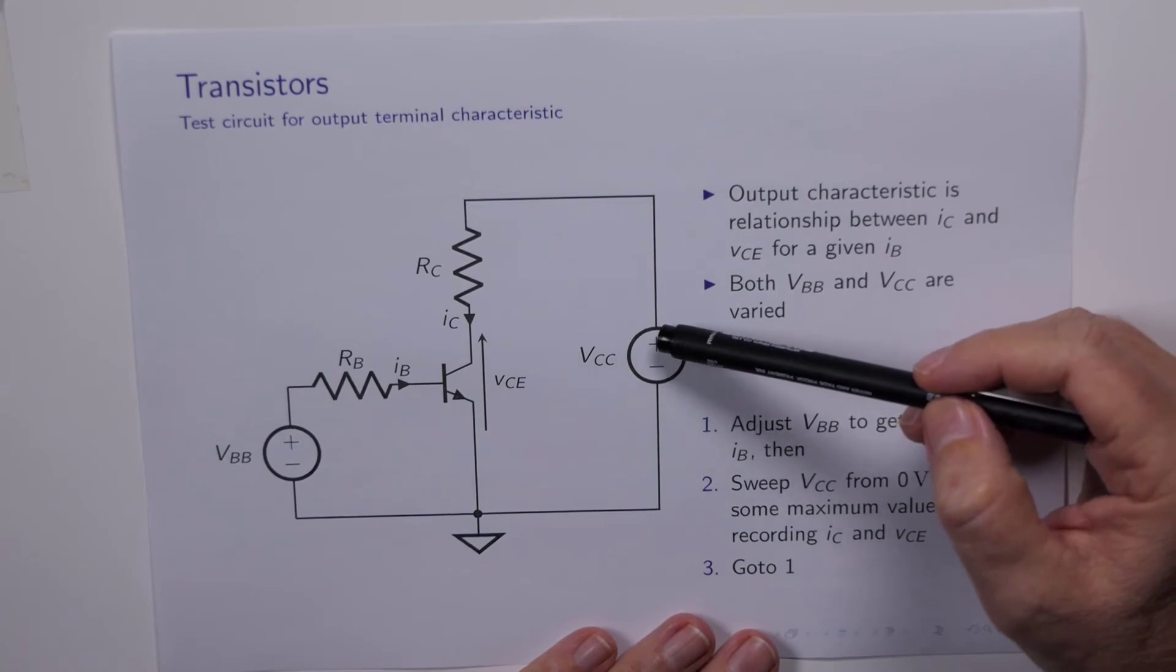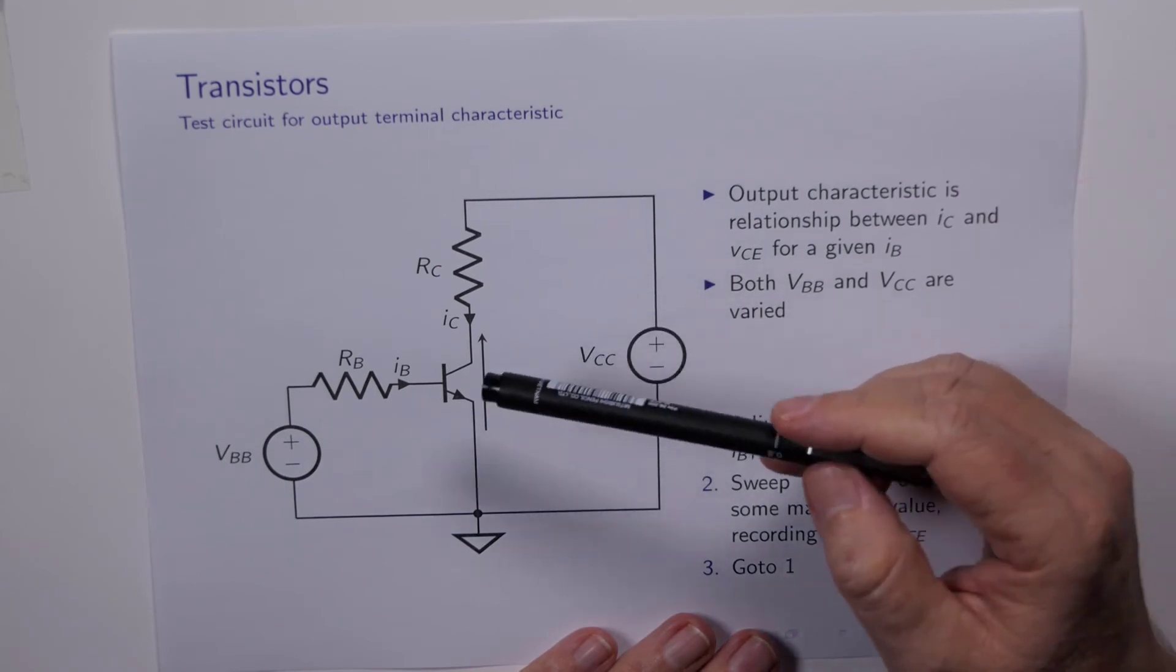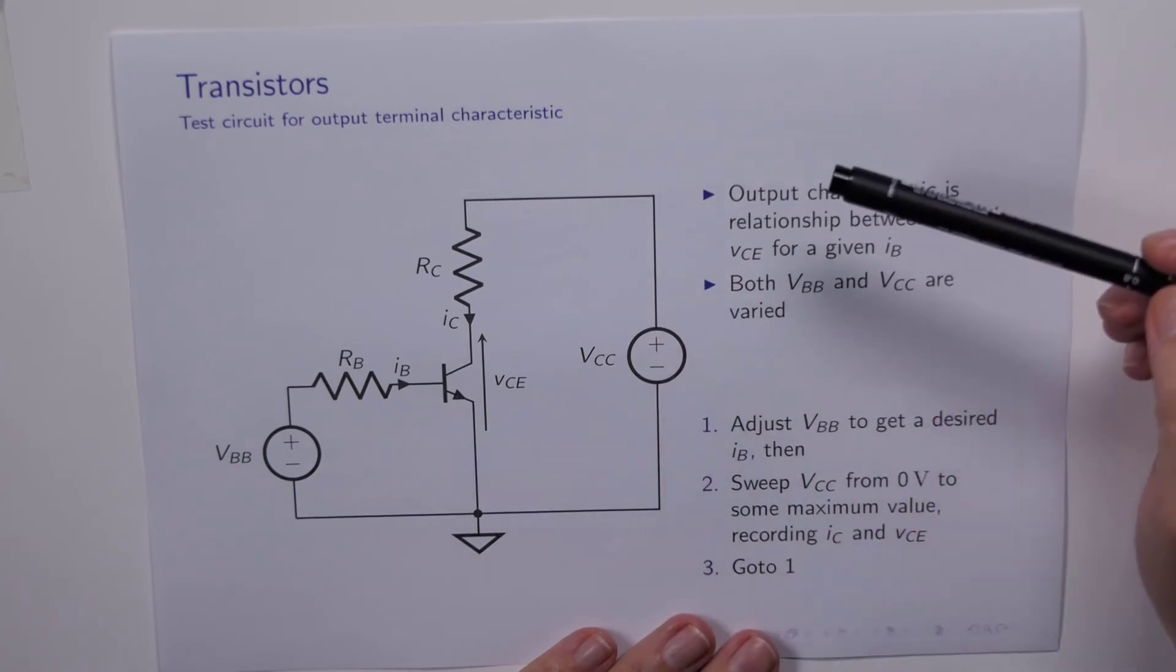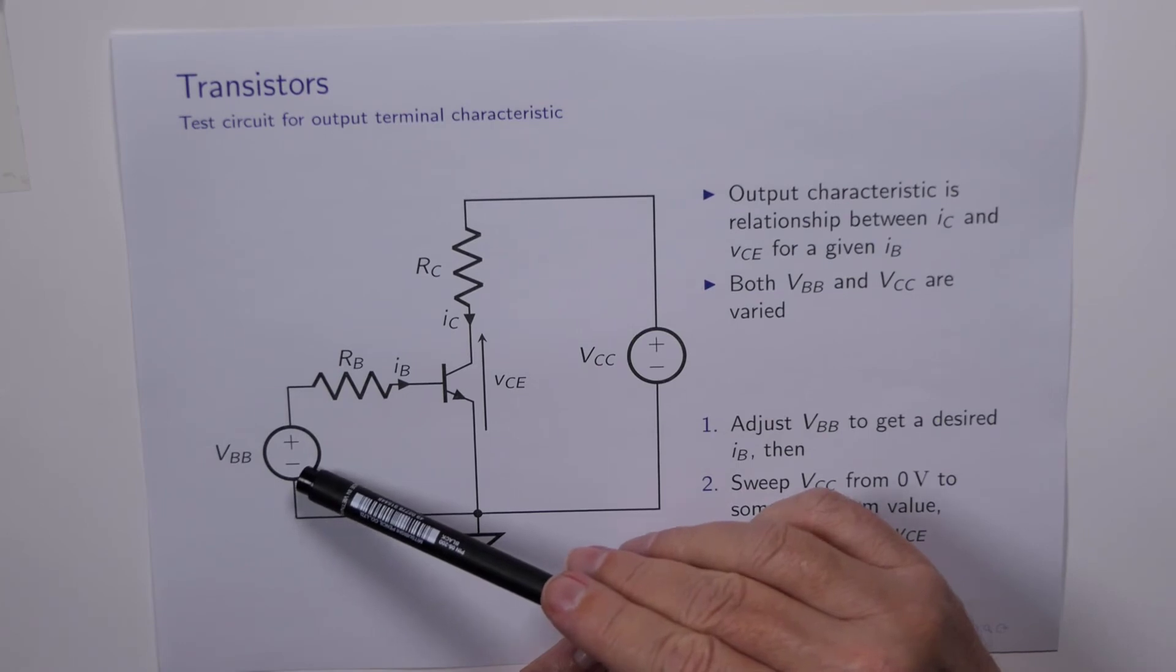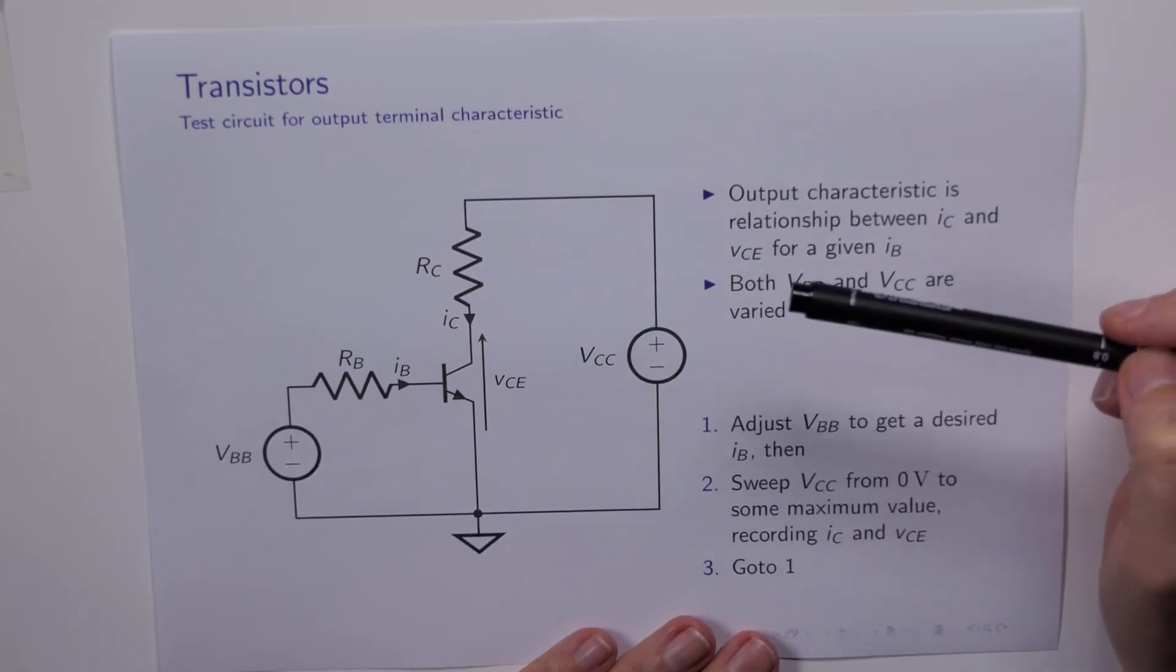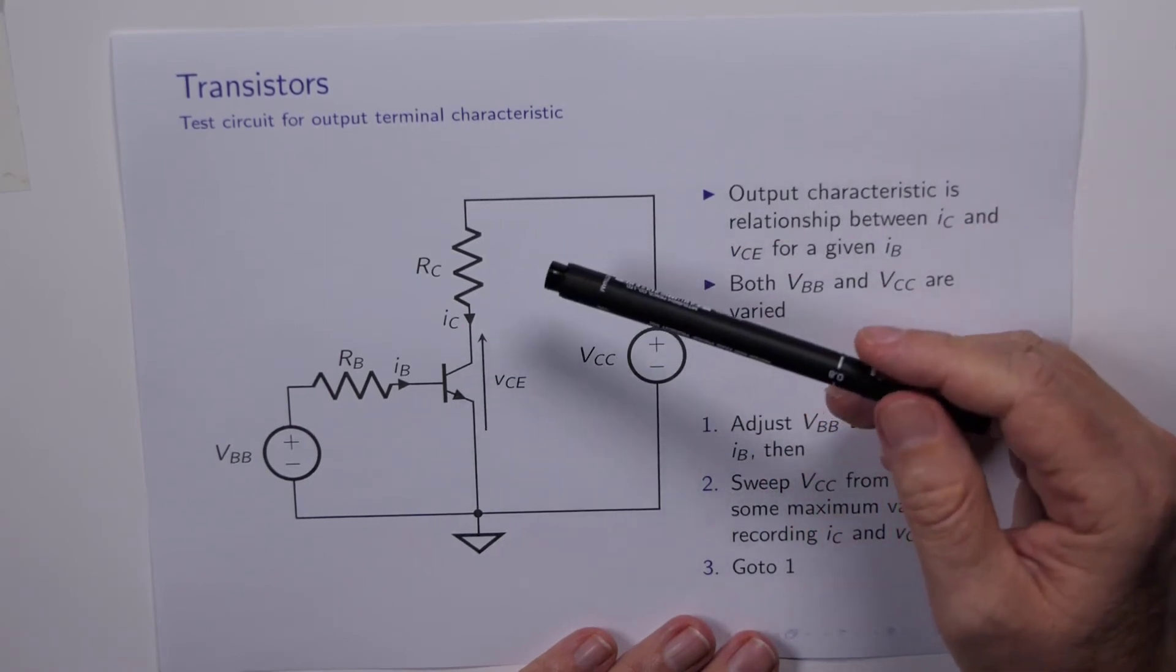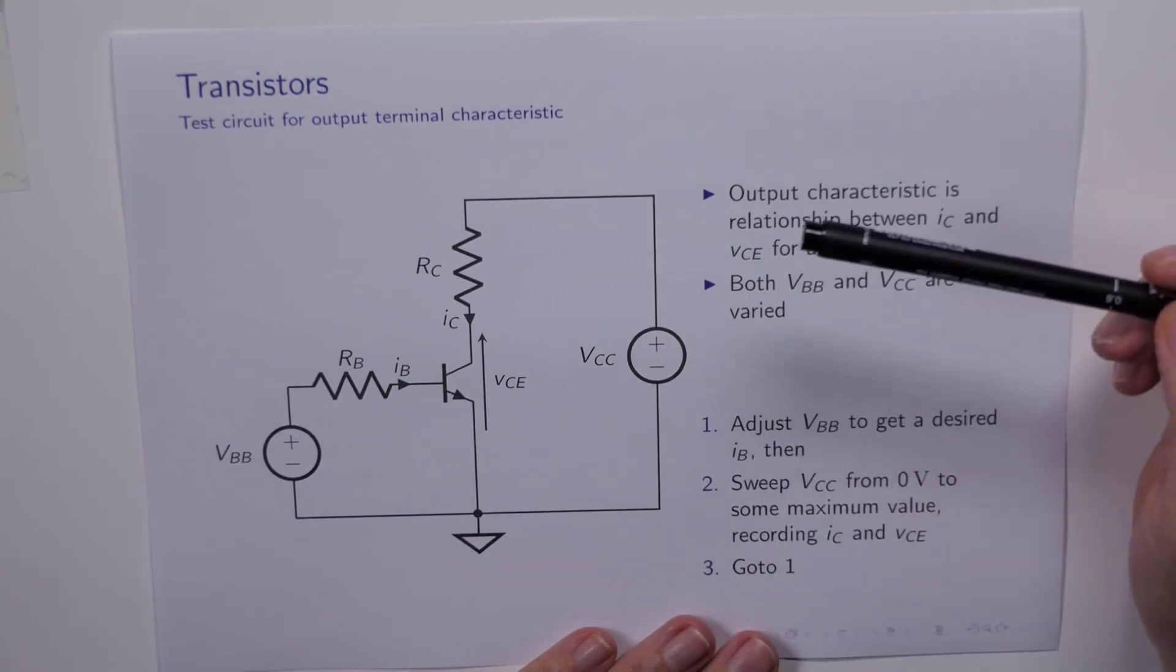And as we keep increasing VCC, we record this pair IC, VCE, and then we draw a graph of IC versus VCE given this value of IB. Then we go back to the beginning, we change VBB until we get a slightly different value of IB, and then we sweep VCC all over again. And instead of just getting one curve of IC versus VCE, we get an entire family of curves, one each for a specific value of IB. And we get a very interesting result.